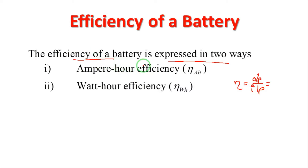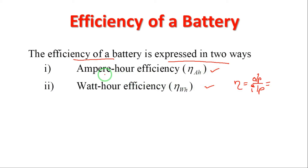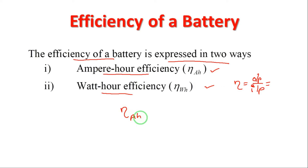The efficiency of a battery can be expressed in two ways. The two types are: ampere-hour efficiency and watt-hour efficiency. Ampere-hour efficiency is indicated by eta with suffix A.H., and watt-hour efficiency is the second type.